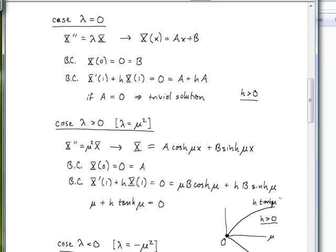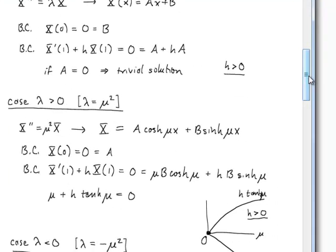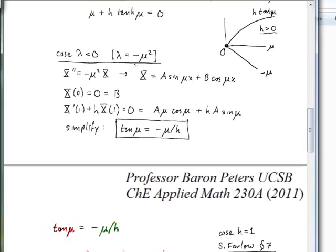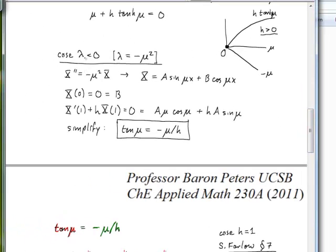Graphically, h times tanh(μ) asymptotically approaches h, while the other side is minus μ, a downward-sloping line. For positive h, the only intersection occurs at μ equals zero, which gives sinh equal to zero and hence a trivial solution. Therefore positive eigenvalues are also not admissible.